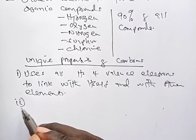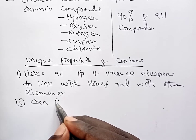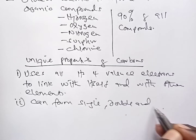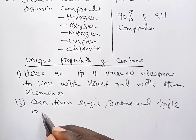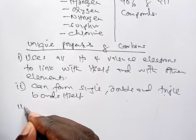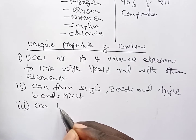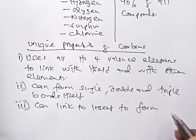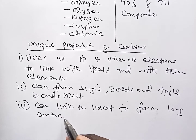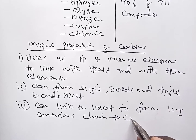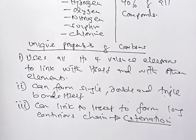The second property unique to carbon is that carbon is able to form single, double, and triple bonds with itself. This is very unique — it is only carbon that is able to do that. The last unique property of carbon is that it can link to itself to form long, continuous chains. This property is known in chemistry as catenation, and it is only carbon that has this property.